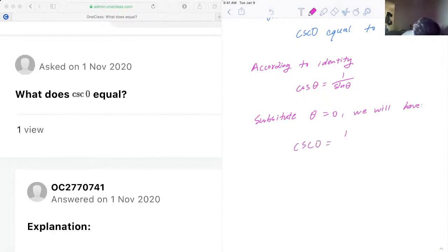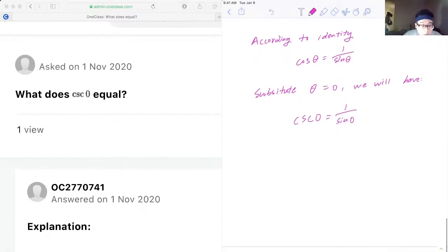Cosecant zero is equal to one over sine zero. We know that the sine of zero is also zero.